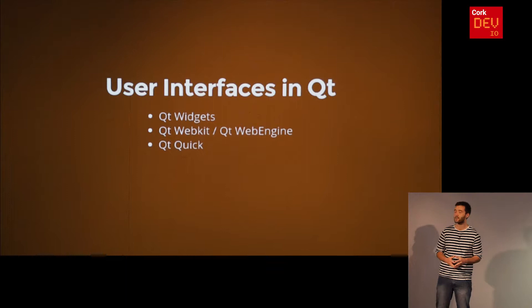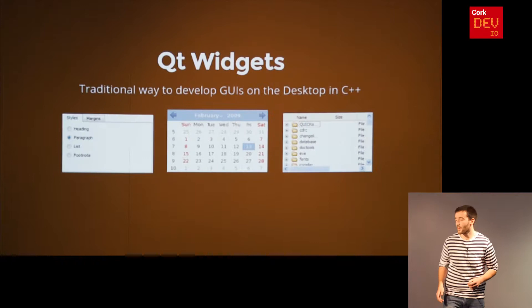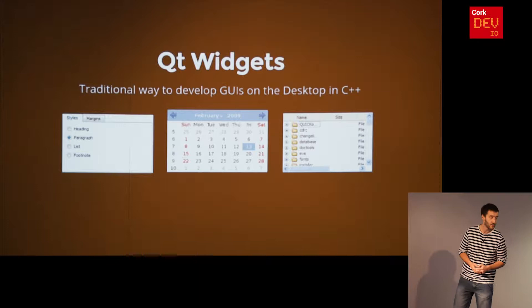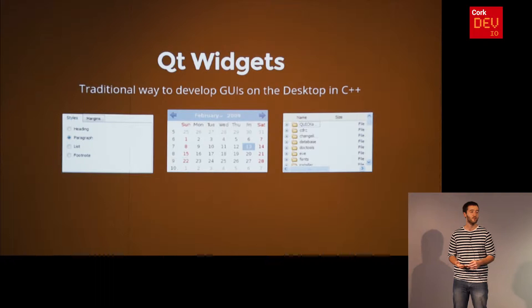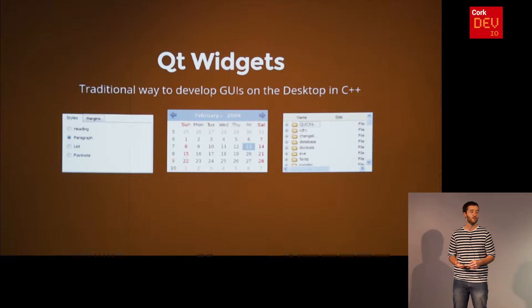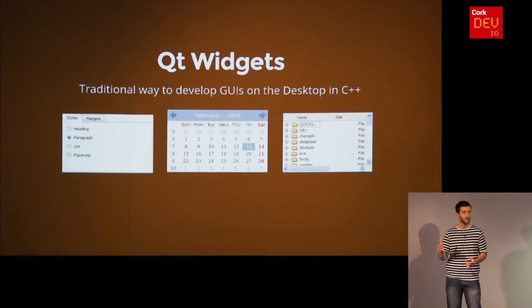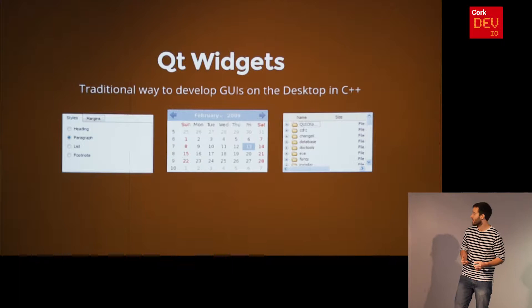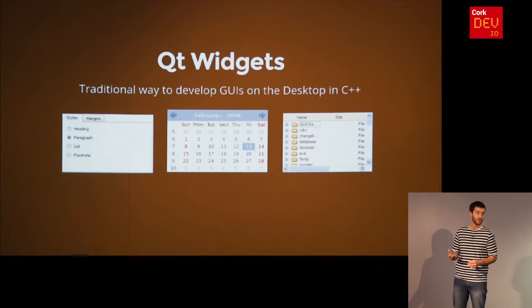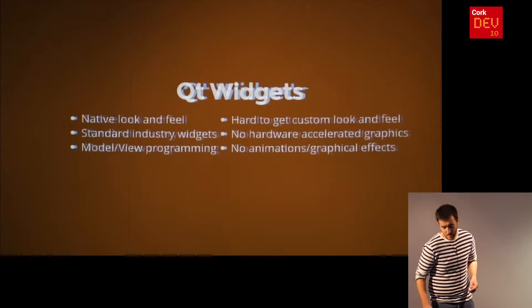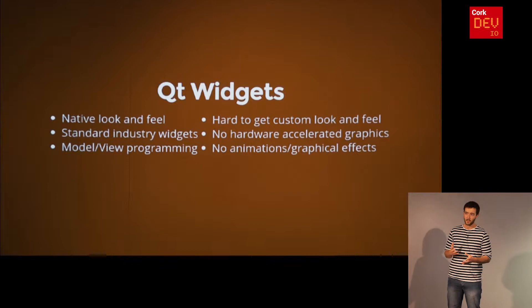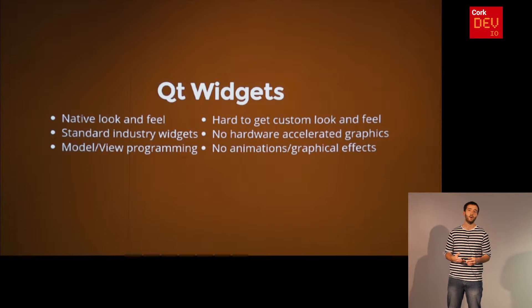Tonight I want to focus on the different ways to create user interfaces in Qt, and more specifically on Qt Quick, which is their new innovative approach. One way to create user interfaces in C++ is to use Qt Widgets — the traditional way to develop GUIs on the desktop in C++. It's a very similar concept to what you have in managed programming languages like .NET, where you have a form designer where you can drag and drop widgets, set properties, and add code to handle events such as a user clicking a button. Qt Widgets are basically the same thing for C++ applications in Qt.